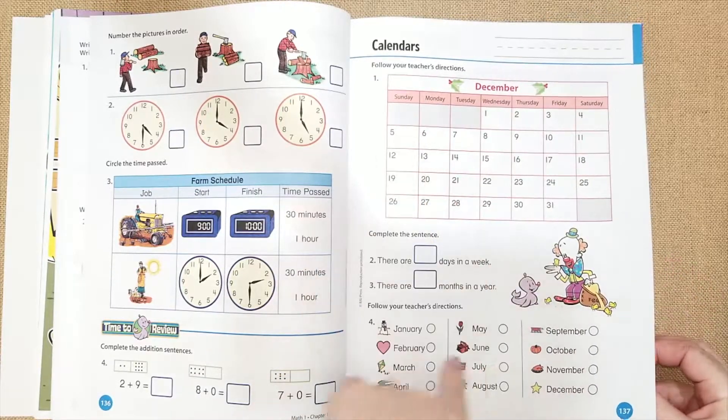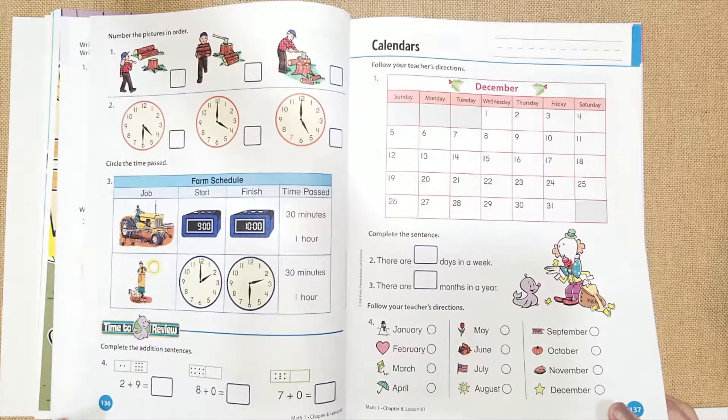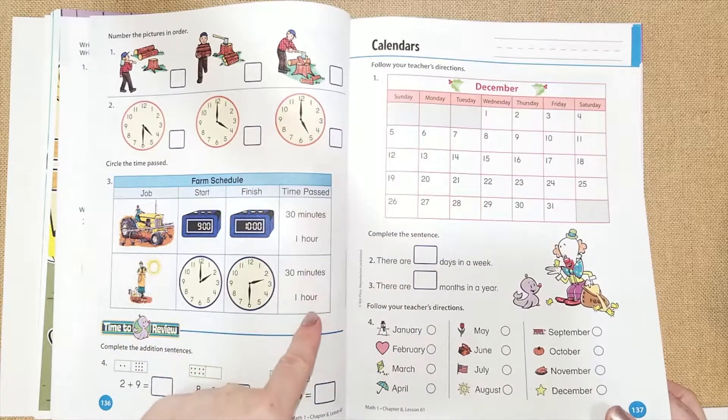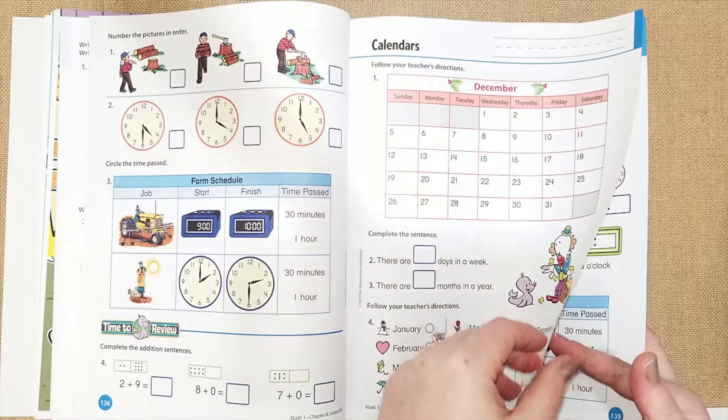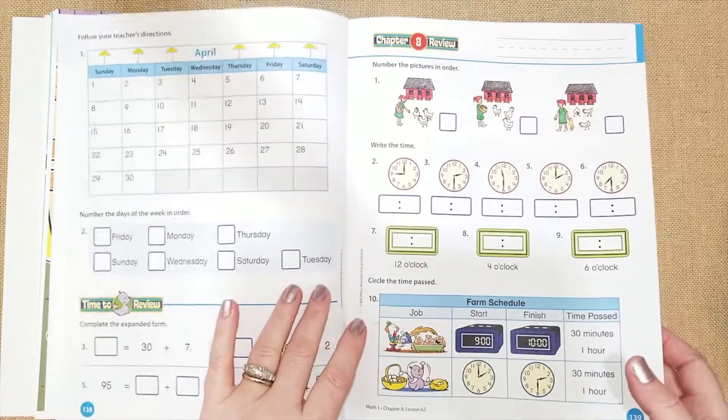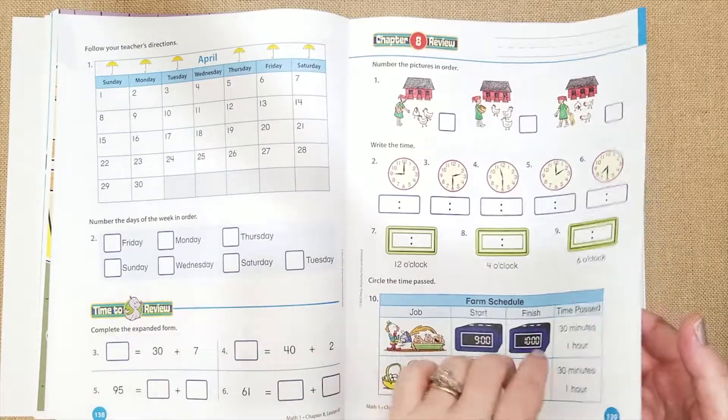And she loves calendars. So here, for instance, without a teacher's edition, it says follow your teacher's directions and complete the sentence. They might have directions for me in the teacher's guide to do. I'll just kind of wing it and I'll make some stuff up, but they have lots of things in here to do.